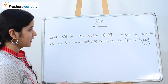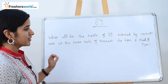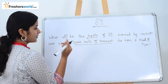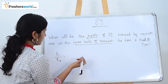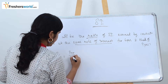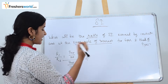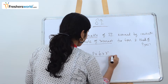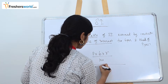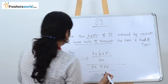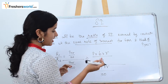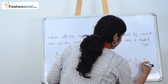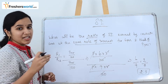What will be the ratio of simple interest earned by a certain amount at the same rate of interest for 6 years and 9 years? Ratio 1 divided by Ratio 2 equals (PNR/100) for 6 years divided by (PNR/100) for 9 years. Since the same principal is used and rate is the same, P, R, and 100 all cancel out. It is simply 6 by 9, which equals 2 by 3. So the ratio is 2 is to 3.